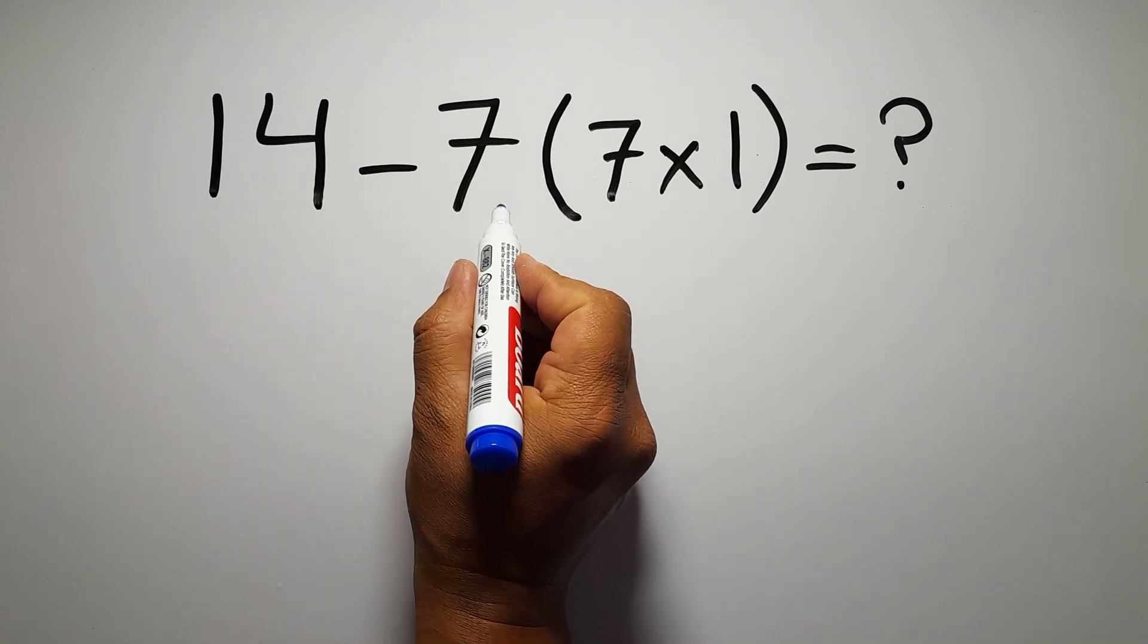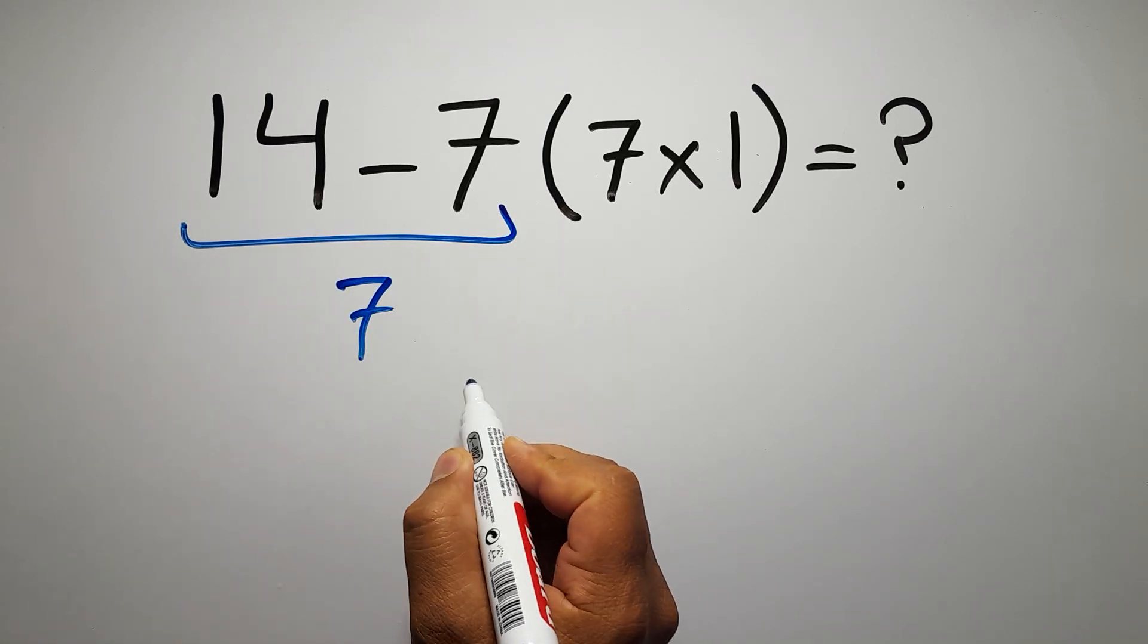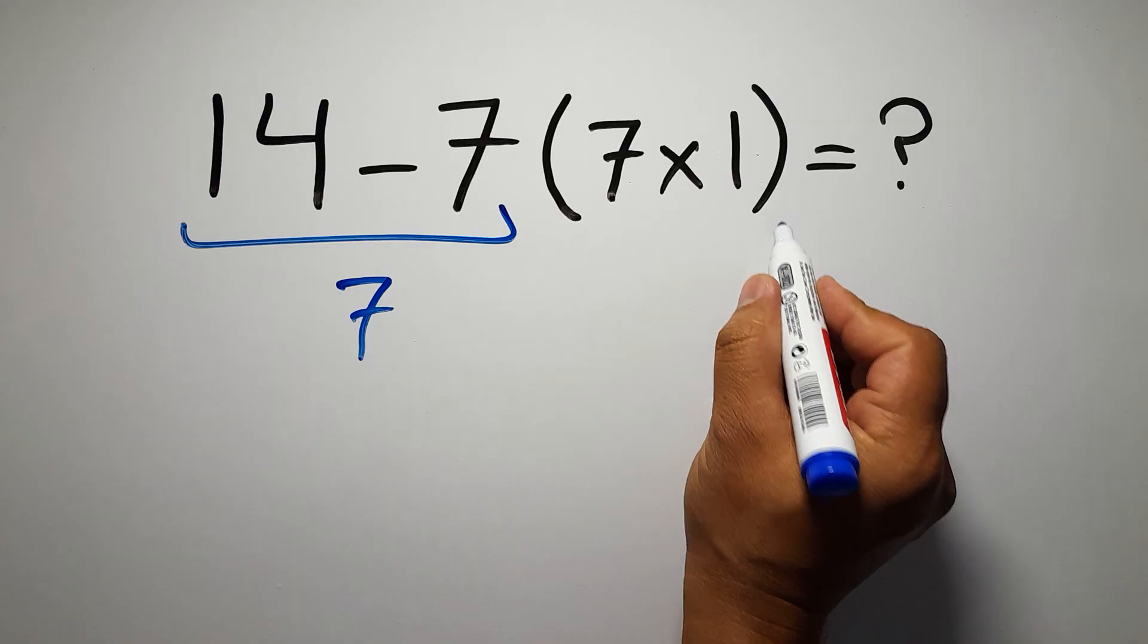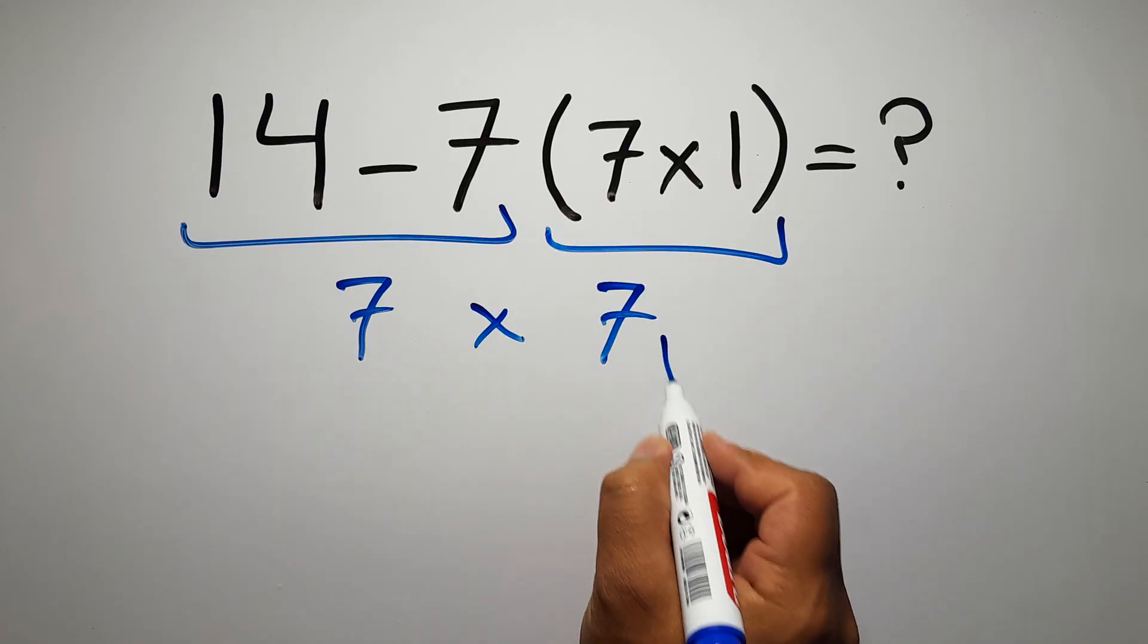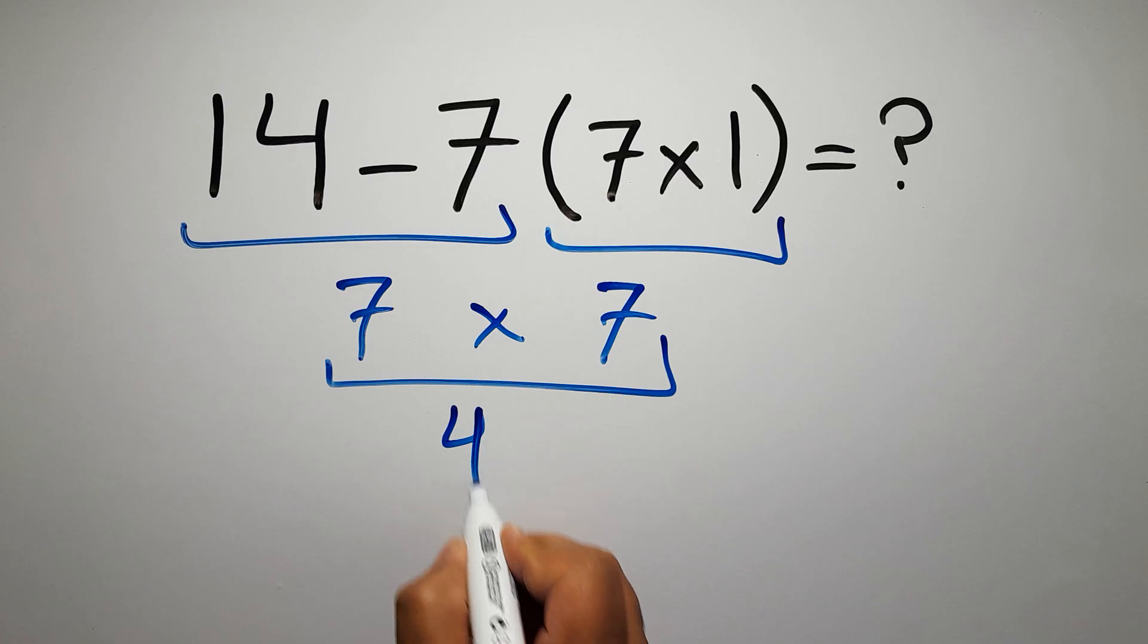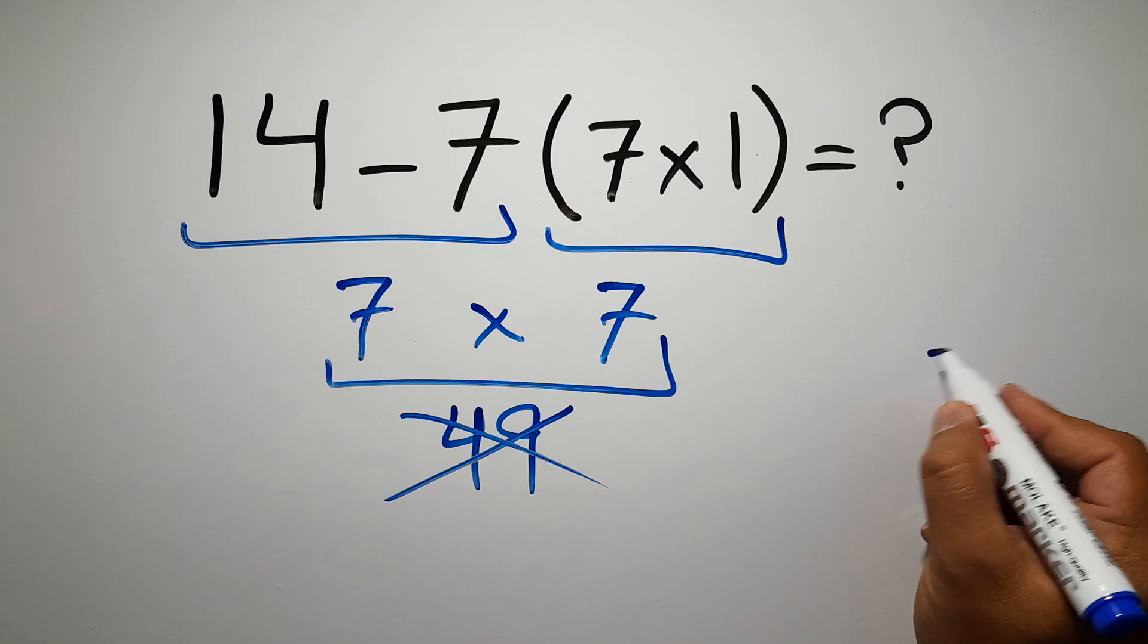14 minus 7 gives us 7, and here we have 7 times 1 which equals 7. So 7 times 7 gives us 49. But this answer is not correct because according to the order of operations, first we have to do parentheses, then exponents, then multiplication or division, and finally addition or subtraction.